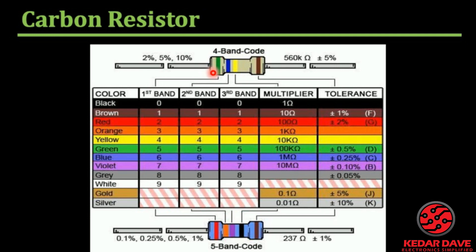One important thing to understand and remember is the reading direction of the bands. When reading a resistor, we read the bands from left to right. The two bands that are closer together are on the left side, and we read starting from there going left to right.